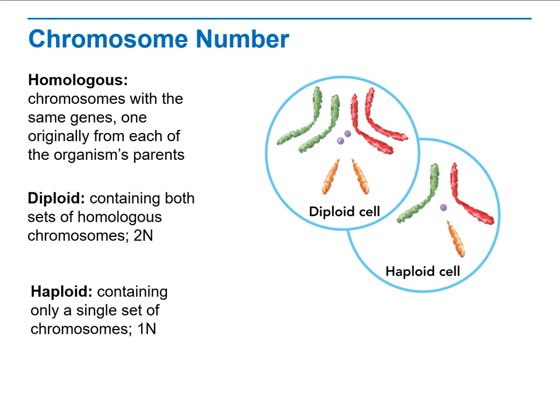Humans have 23 pairs of chromosomes, or 46 total chromosomes, and these chromosomes are paired up into what we call homologous pairs. The example on the slide is from a fruit fly. The fruit fly's body cells are diploid, which means they contain both sets of homologous chromosomes. We indicate a diploid cell using the notation 2N. The gametes — sperm and eggs — are haploid, meaning the cell contains only a single set of chromosomes, indicated by the notation 1N. Most cells in our bodies are diploid; the only cells that are typically haploid are the sex cells, the sperm and the eggs.